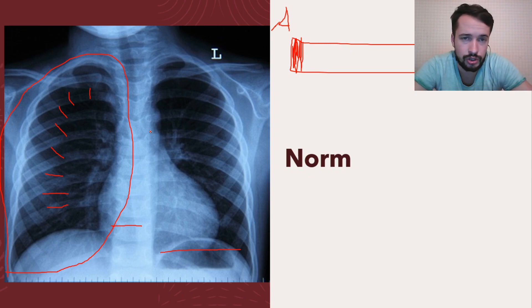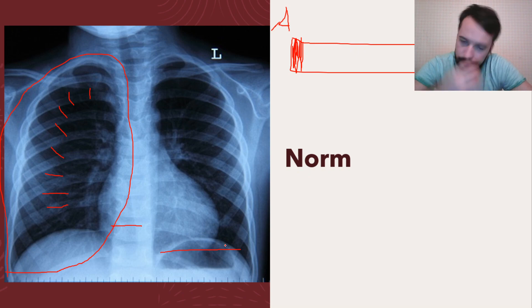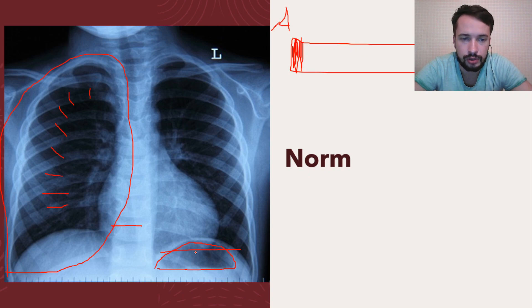The densities of structures are different. For example, air is black. The density of lung or air and the density of vertebra are different. Our body areas filled with air will appear black, as we can see. Now let's talk about the stomach. In a normal situation, we have air in the stomach — we call it the bubble of the stomach. Normally, we can see this white line.